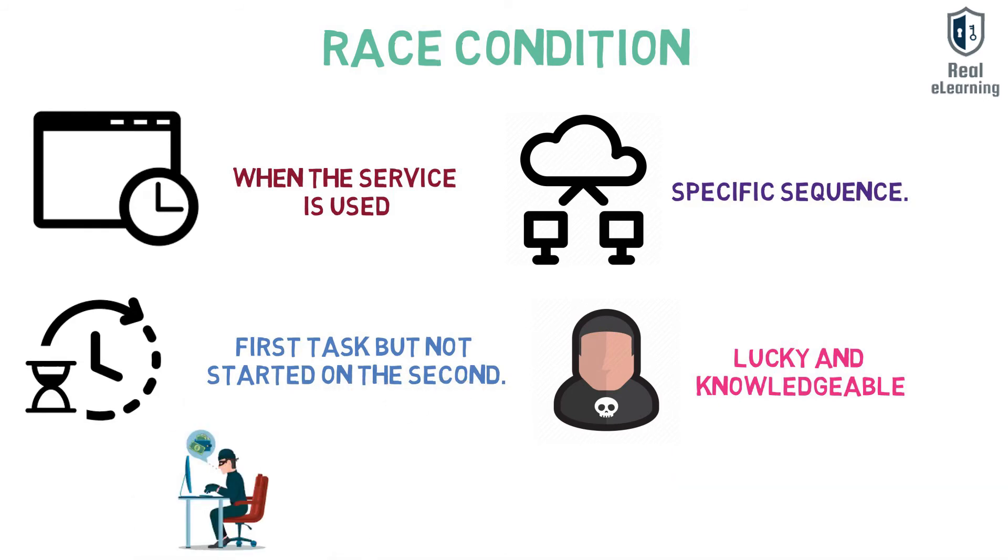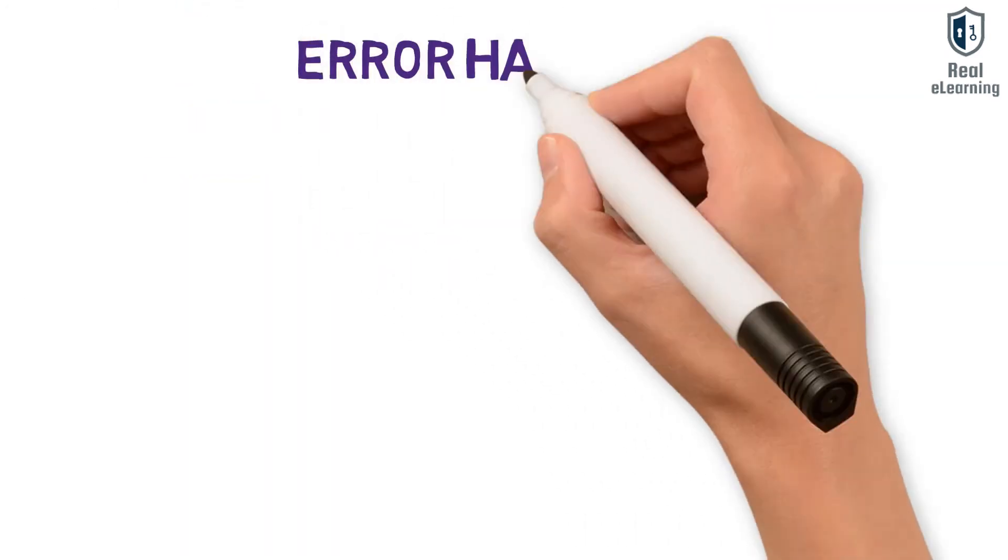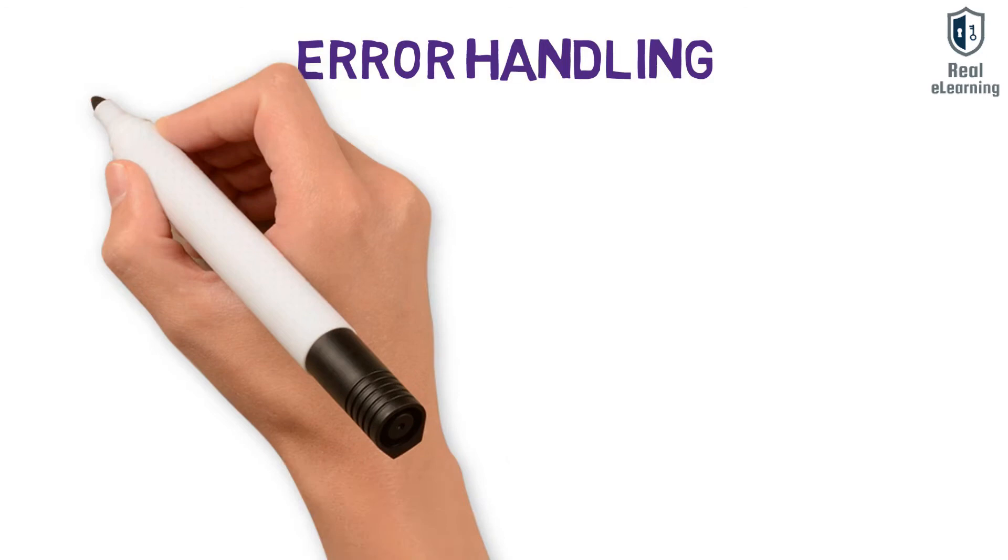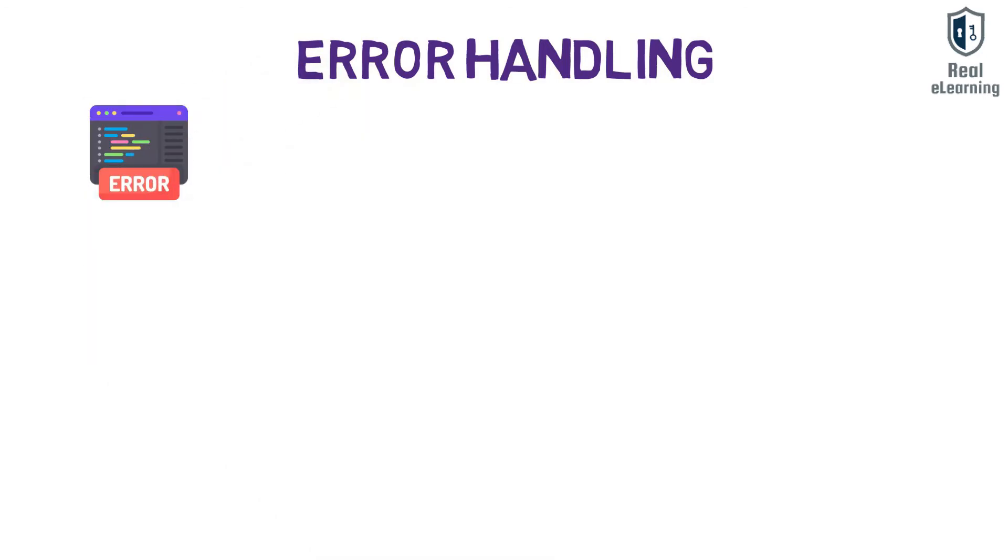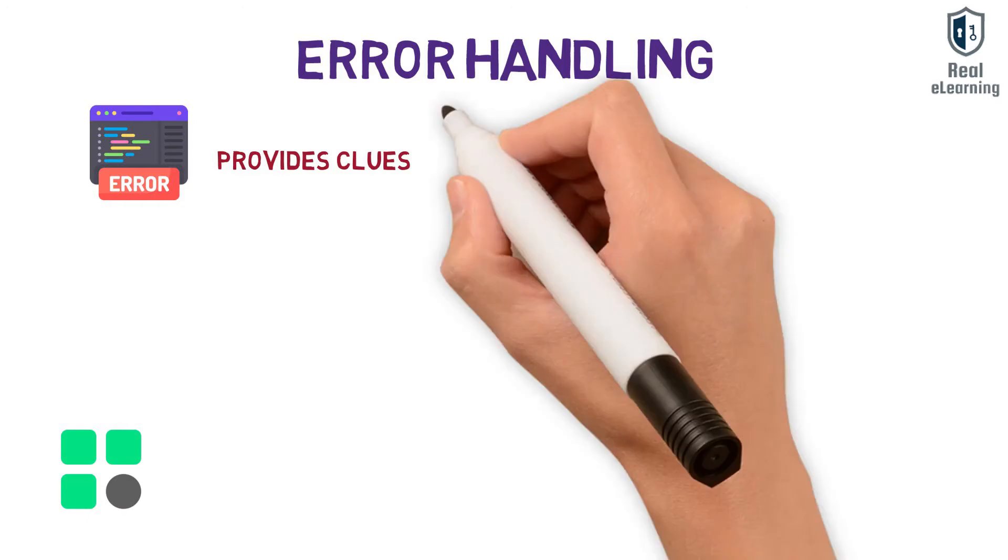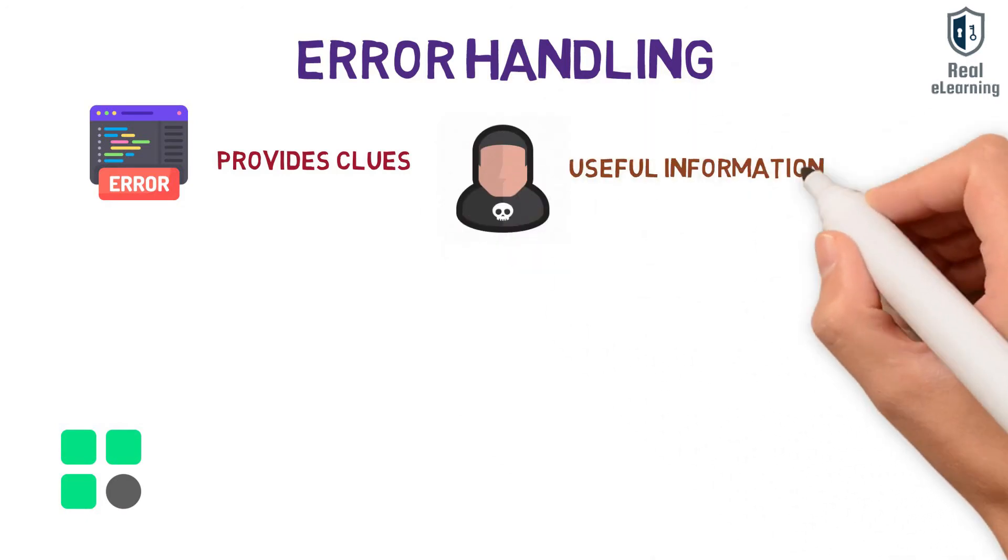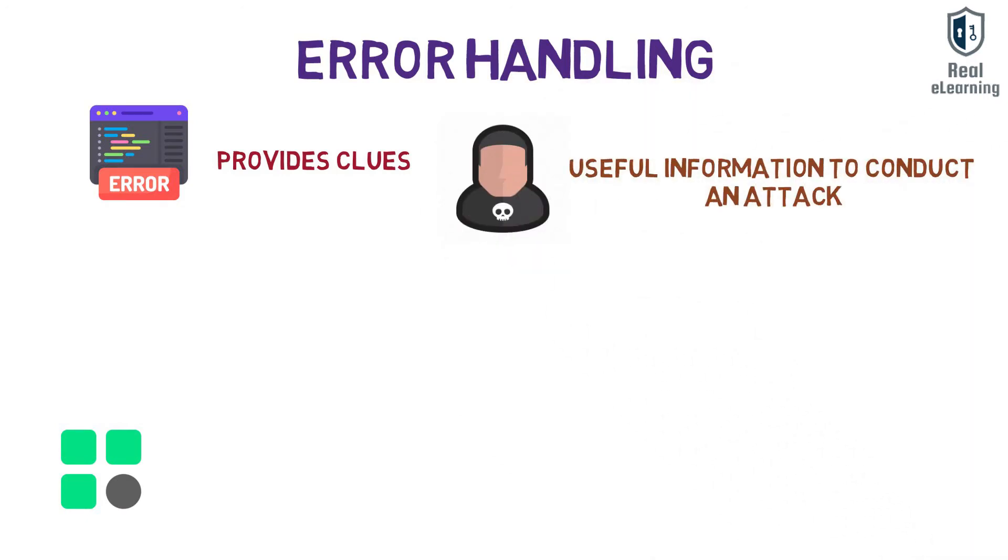Error handling flaws occur when an error message that's displayed to an end user provides clues about how an application or website operates and gives the potential attacker very useful information to conduct an attack. Although messages like this can help developers fix problems on their sites, they also show attackers information that they can use to help them break into what should be secured areas.